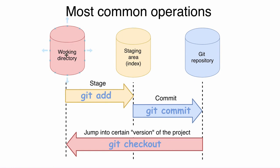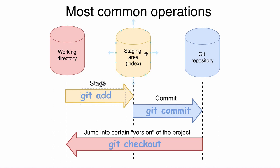Here are the three git areas: working directory, staging area or index, and git repository. Using the git add command we can move files from the working directory into the staging area. As you already know, we can add to the staging area either untracked files or modified files, and we can add either a specific file or all files that were modified or just added to our working directory. That is the git add command.